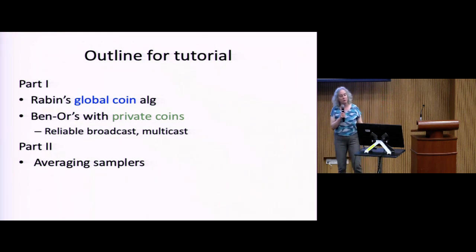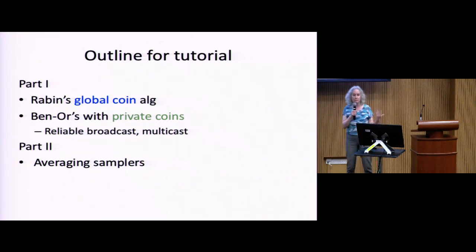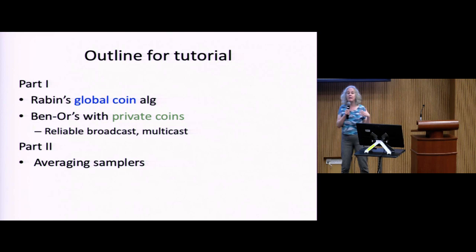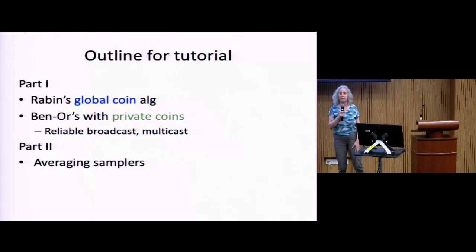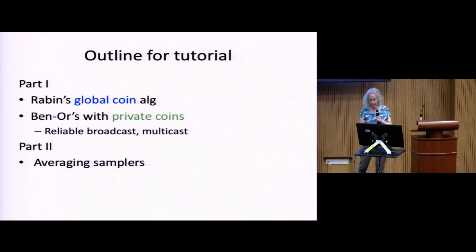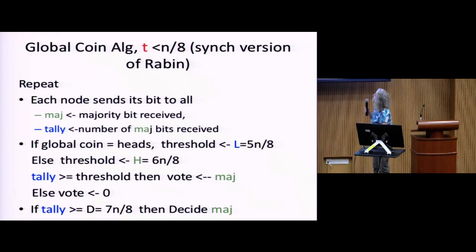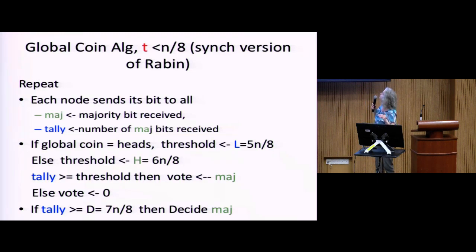I'm going to talk about Rabin's Global Coin Algorithm. This particular version runs in the synchronous model and has a fault tolerance of N over 8 — it only tolerates less than N over 8 bad guys. Each node sends its bit to all other nodes, then takes the majority of what it receives, sets its bit to the majority value, and counts the tally — the number of nodes that sent the majority bit. The deterministic algorithm works by detecting bad nodes.